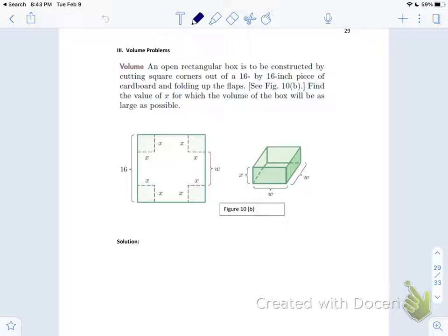And this should make you think, I've got to really kind of stretch a little bit. It's not all going to be about a rectangular area. There's going to be more interesting problems out there, and you have the ability to do them at this point. So this is a volume problem. An open rectangular box is to be constructed by cutting square corners out of a 16 by 16 inch piece of cardboard and folding up the flaps. Find the value of x for which the volume of the box will be as large as possible.